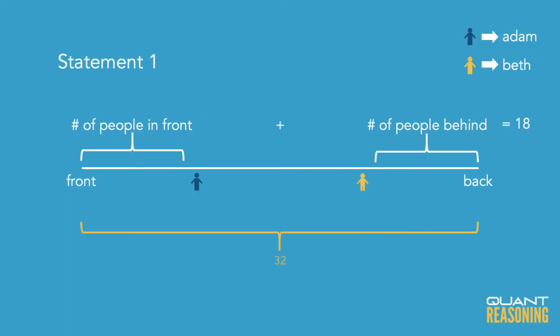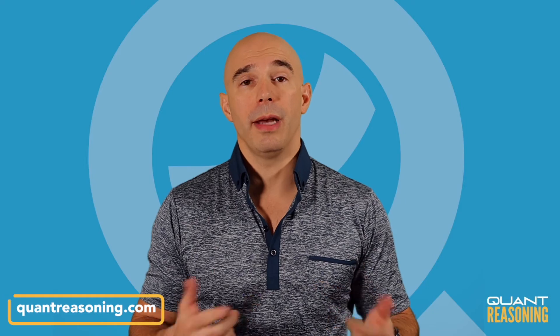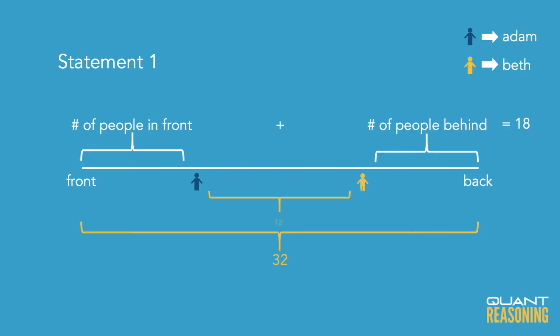Statement one tells us that there's a total of 32 people in the line, including Adam and Beth. We know that the people ahead of Adam plus the people behind Beth makes 18. So that means there are 14 people remaining, including Adam and Beth, which means there are 12 people in between Adam and Beth.